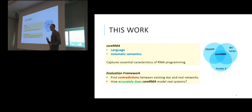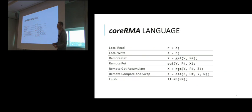In this work, we have the following two contributions. First, we propose coreRMA, which is a model that captures the main functionality of existing RMA libraries based on their documentation and based on contacts we had with various network experts. CoreRMA consists of simple language and axiomatic semantics. The second part of our contribution is to implement an evaluation framework that we use to see how precise is our model and how well it captures the actual behaviors of RMA system.